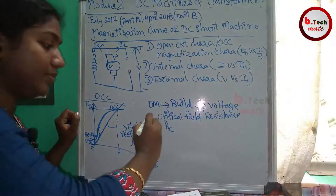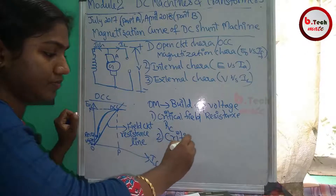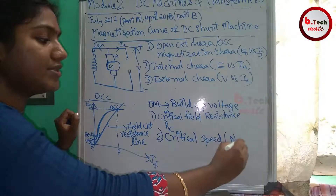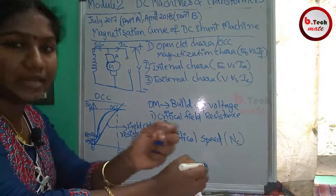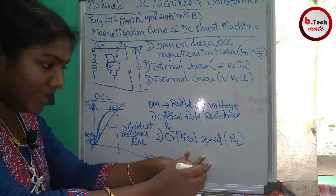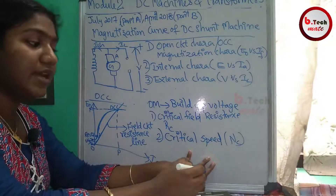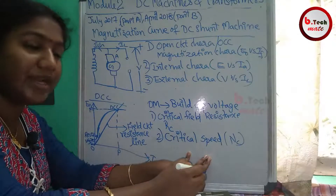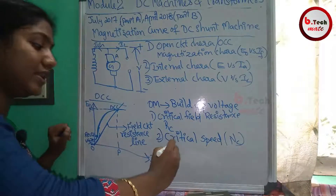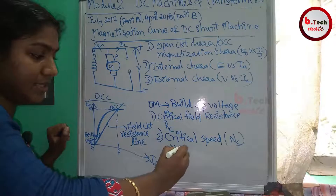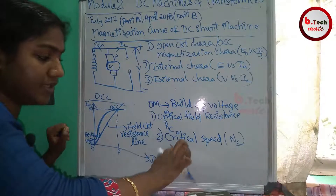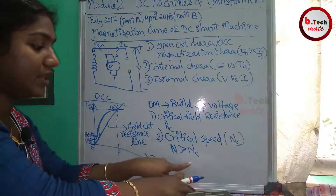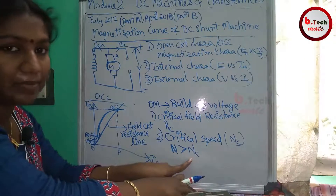The next term is critical speed, Nc. We normally operate at speed N. Critical speed Nc is defined as the minimum speed required to excite the generator, or to build up voltage in the generator. N should be greater than Nc. If N is greater than Nc, there is voltage build-up in the DC shunt machine.